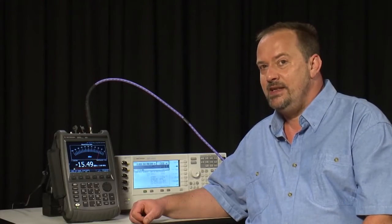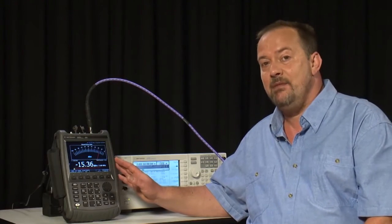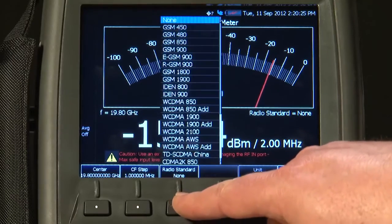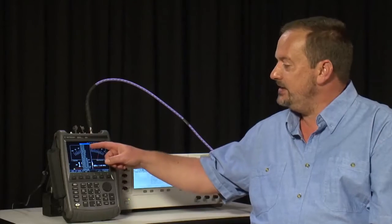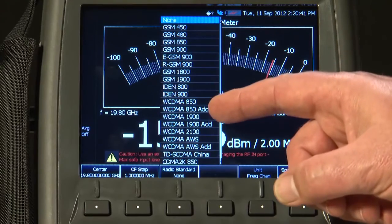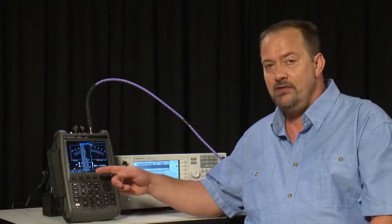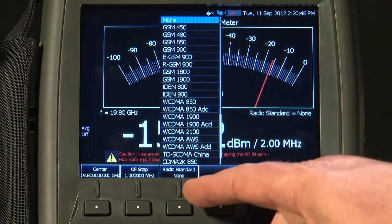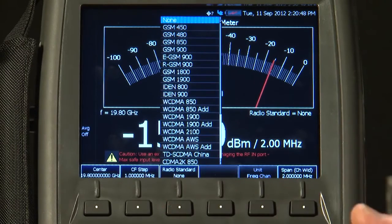And one final thing I will point out that is available in both the channel power meter and in the spectrum analyzer options is the radio standard here. If you are working in one of the commercial radio standards such as GSM, WCDMA, or whatever, then if you do not know the frequency of the channel you are in, you can just select that radio standard and then enter the frequency by channel number instead of in MHz.